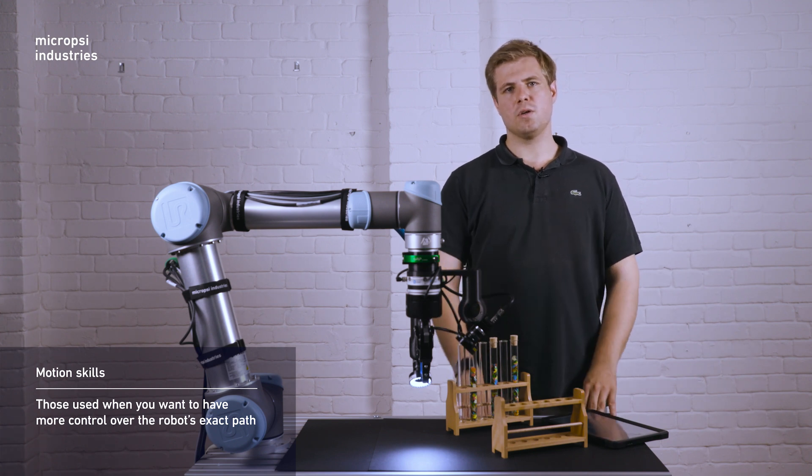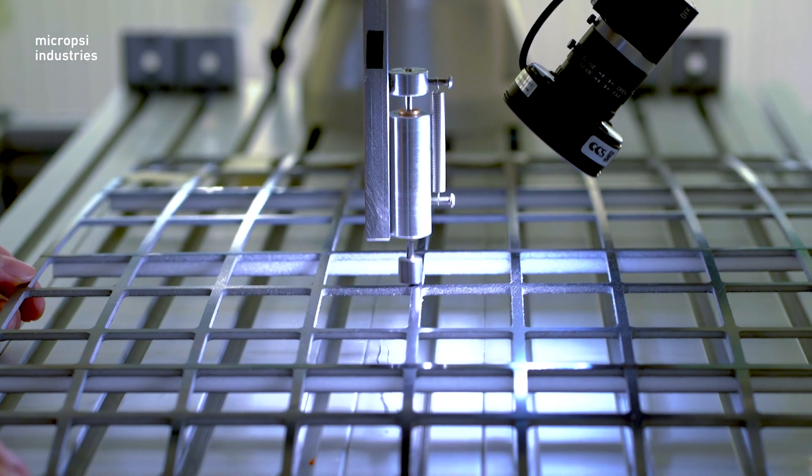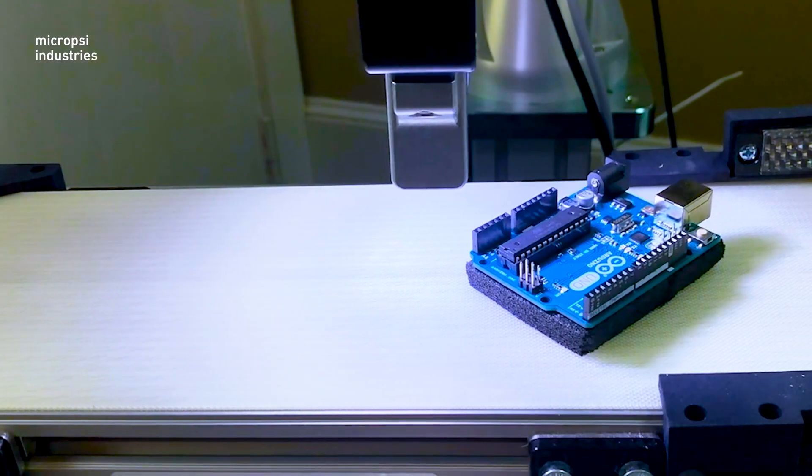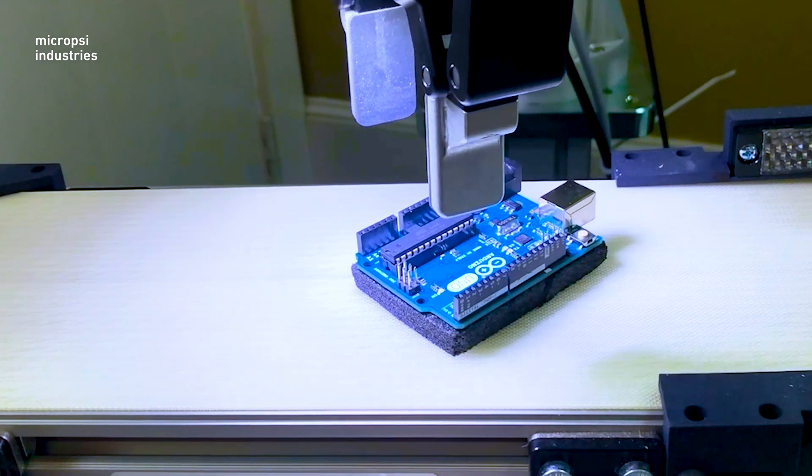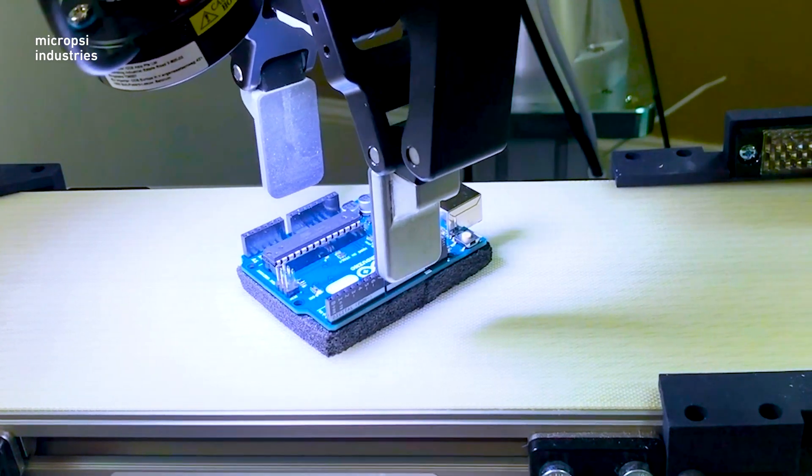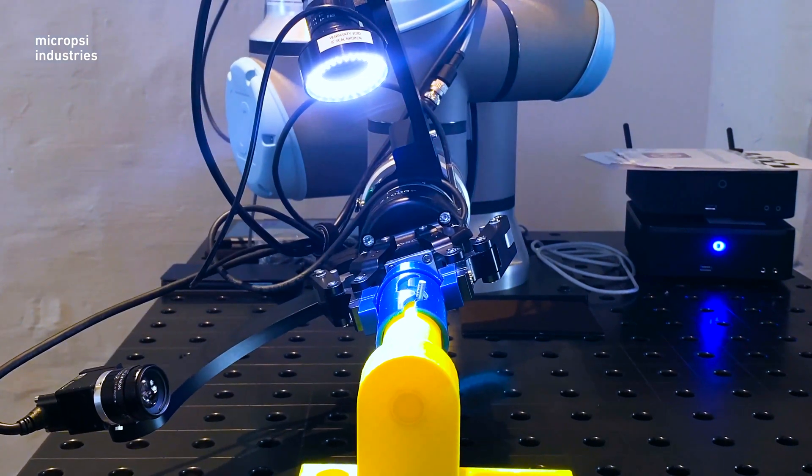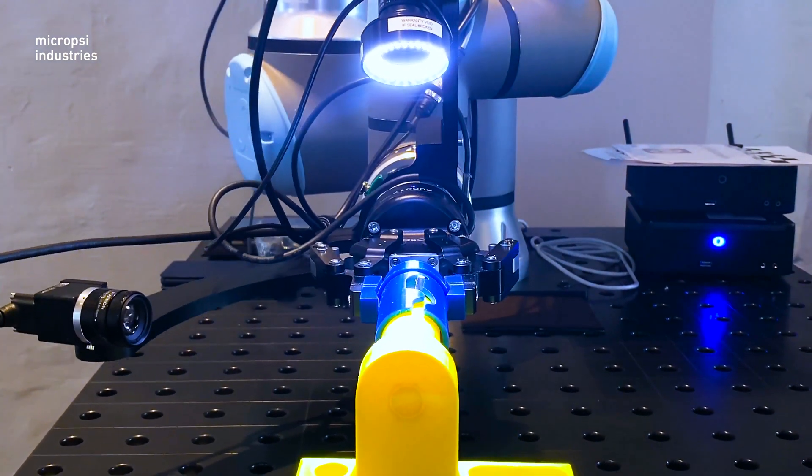Motion skills are useful for contour following tasks, gluing for instance, picking or placing objects from and to a moving conveyor, or positioning the robot end effector where there are obstacles and therefore no direct path.